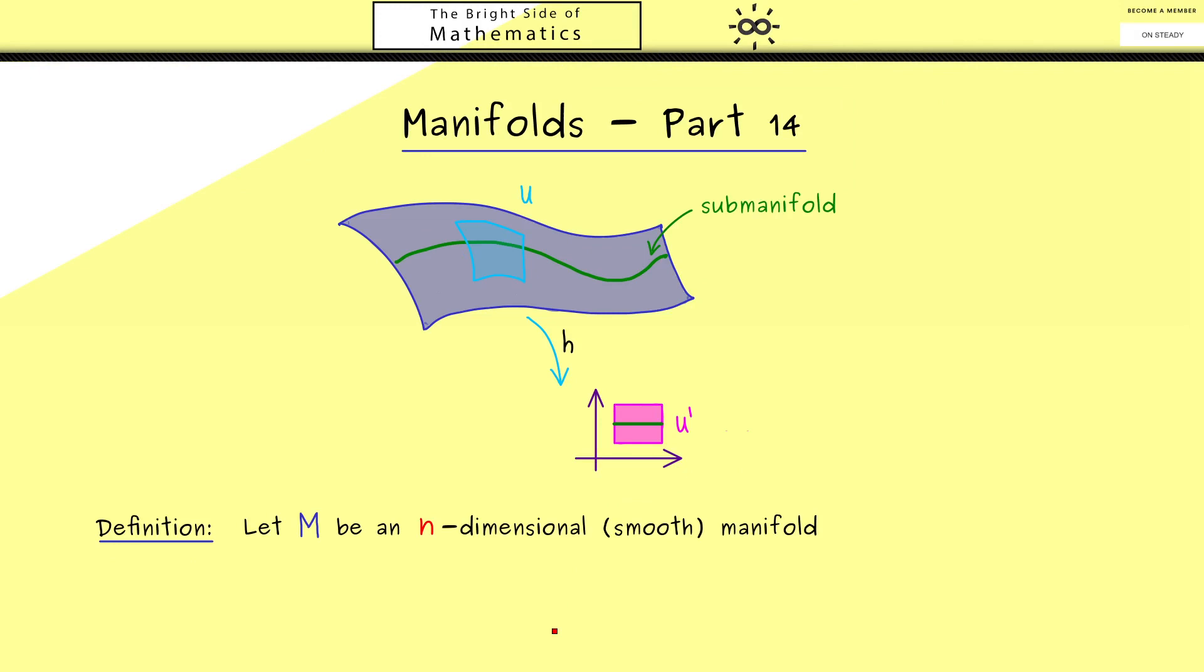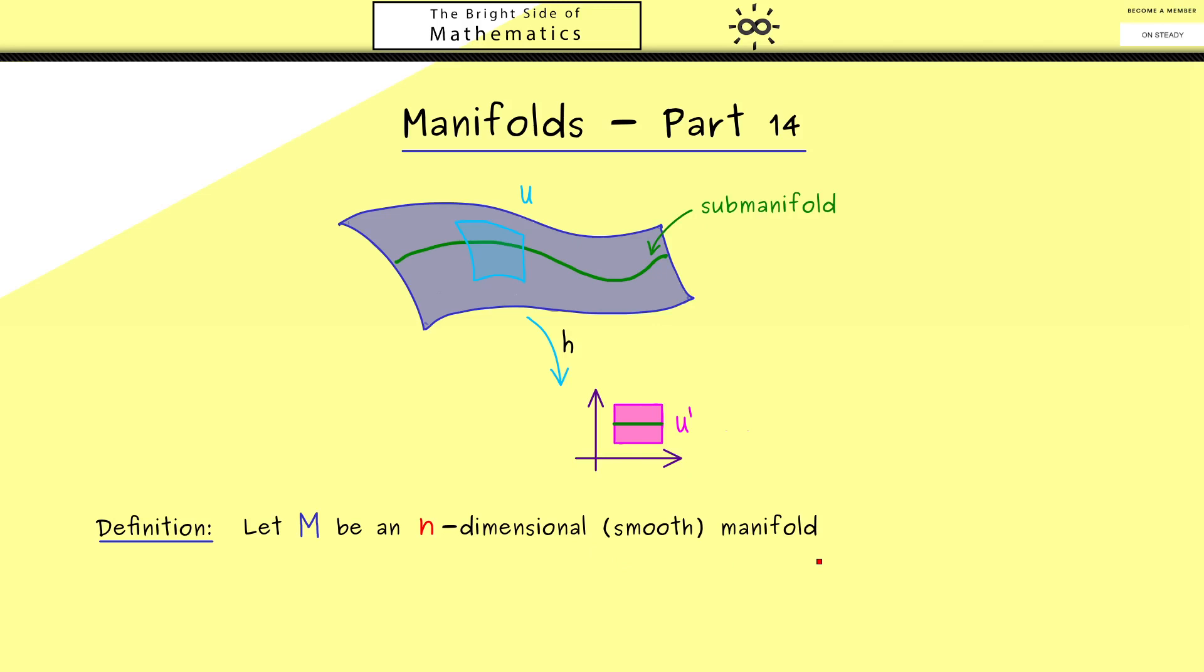So first, what we need is an n-dimensional manifold. Now for the definition of a sub-manifold, we don't need a smooth manifold, but because we will deal a lot with smooth manifolds now, we can also put this into the definition. Okay, now this manifold M will be the large manifold here. And now the smaller manifold, the subset, we call M_0.